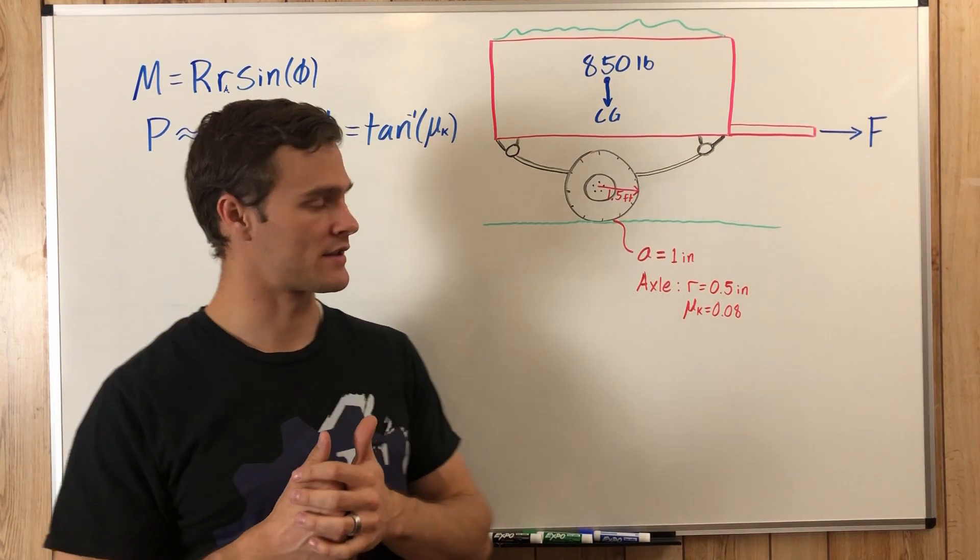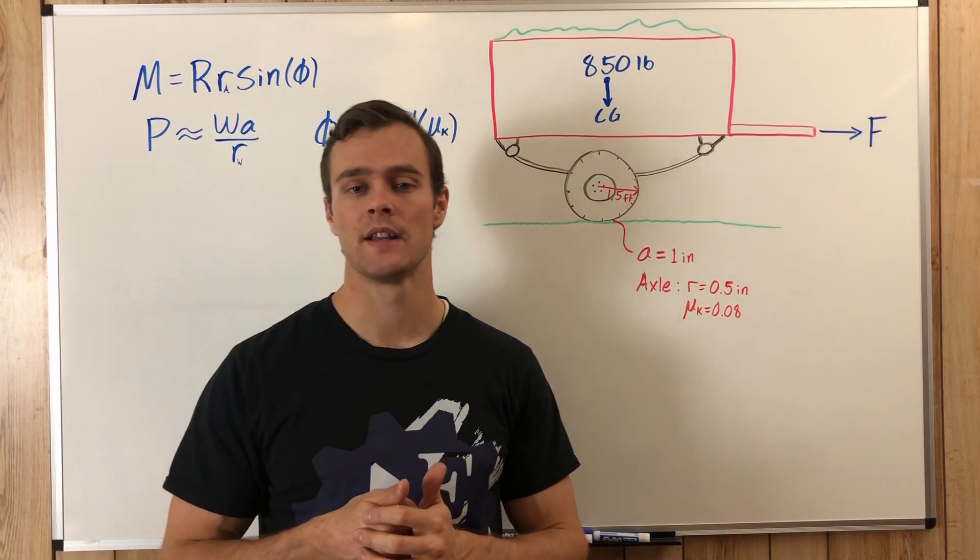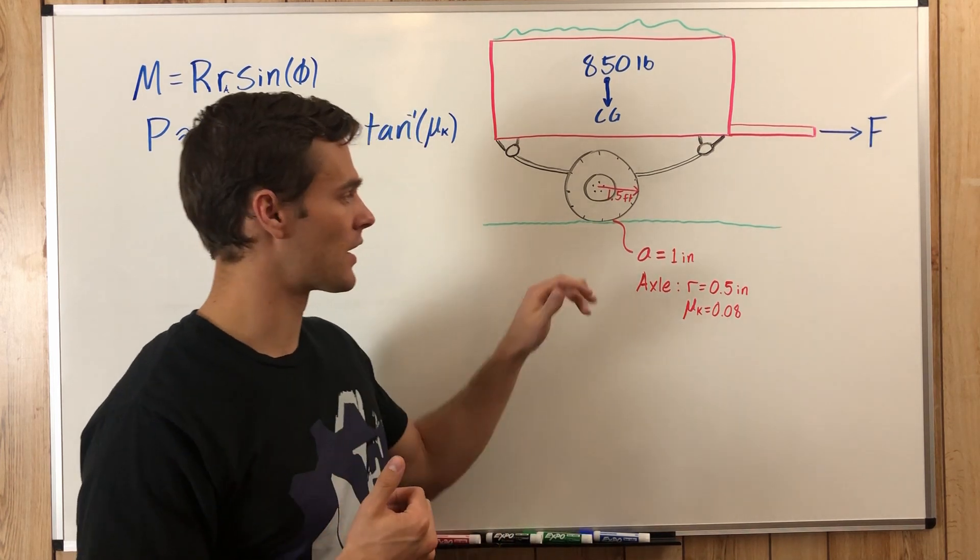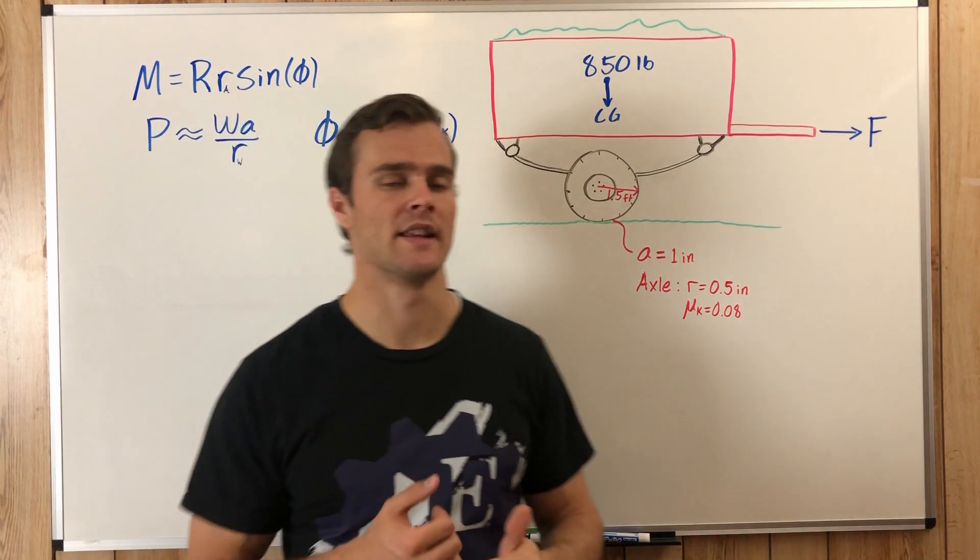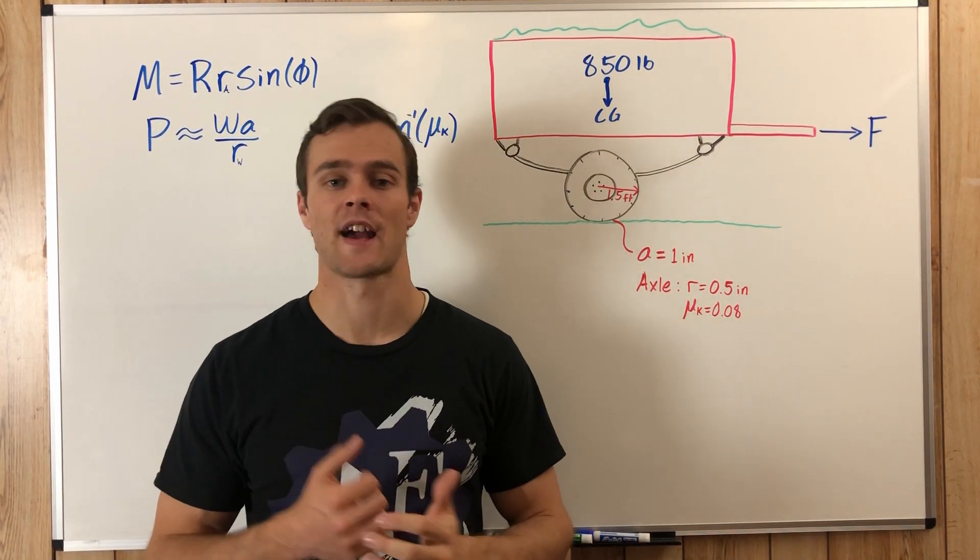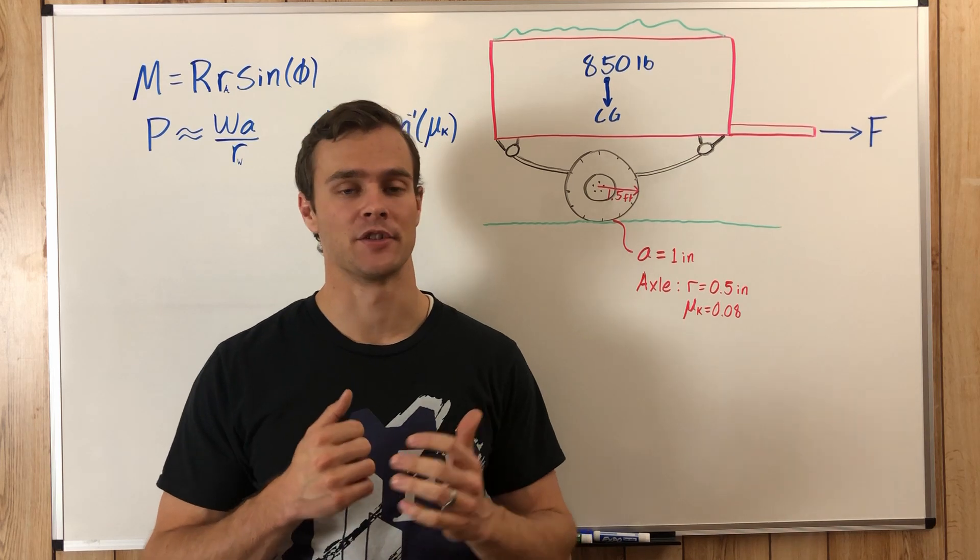Pulling at constant speed means we need to overcome, or just barely overcome, the rolling resistance in the tire and the frictional forces in the axle. We're saying that this axle is sitting on journal bearings on both those tires.